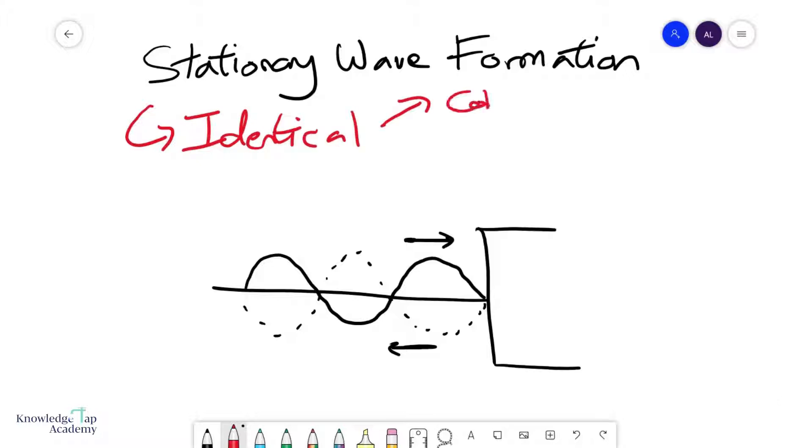When we say identical, we mean they must be coherent, meaning the same wavelength, frequency, and speed. But they must also have the same amplitude. Now, one of the easiest ways to create two identical waves is to simply reflect a wave.